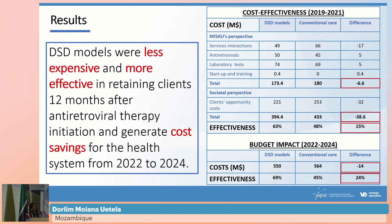Here we present the results. For the cost-effectiveness analysis, from the perspective of the Ministry of Health, the difference in cost comparing differentiated care to conventional care was approximately 7 million dollars, and from the societal perspective this difference was approximately 39 million dollars. The difference in effectiveness comparing these two models was 15% in favor of the differentiated service delivery models.